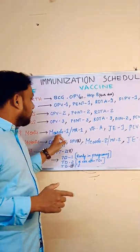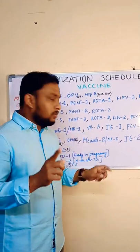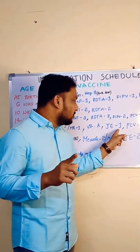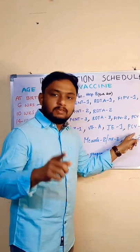9 months: measles or MR first dose, vitamin A first dose, Japanese encephalitis first dose in endemic areas, PCV third dose.